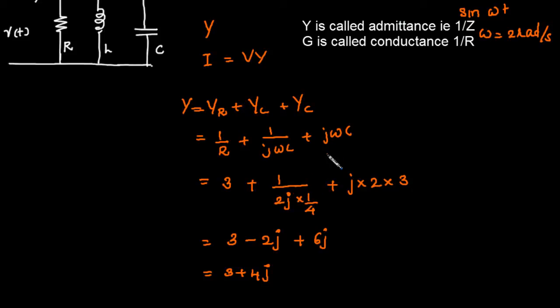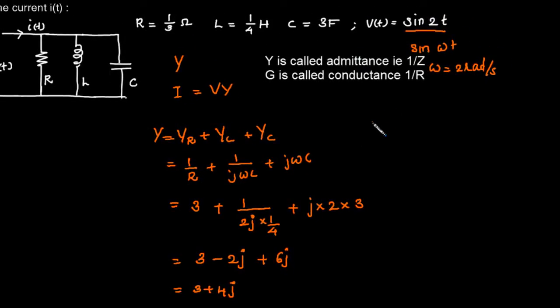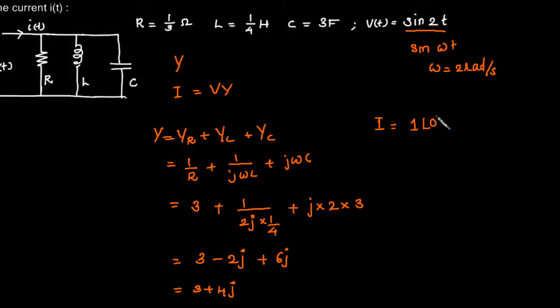Now we have found out what is the conductance. So what is current? Current I will be V into Y. This sine 2t we can consider it as 1 angle 0 degrees, because we can compare it with Vm sine ωt where Vm is 1, omega is 2, with phase φ equal to 0. So the voltage can be considered as 1 angle 0.